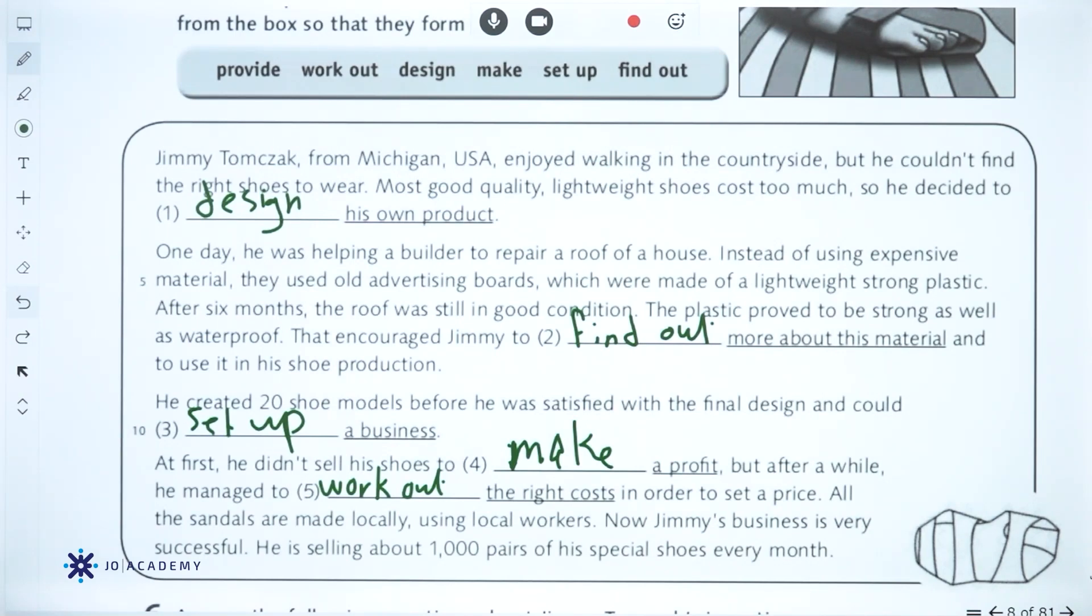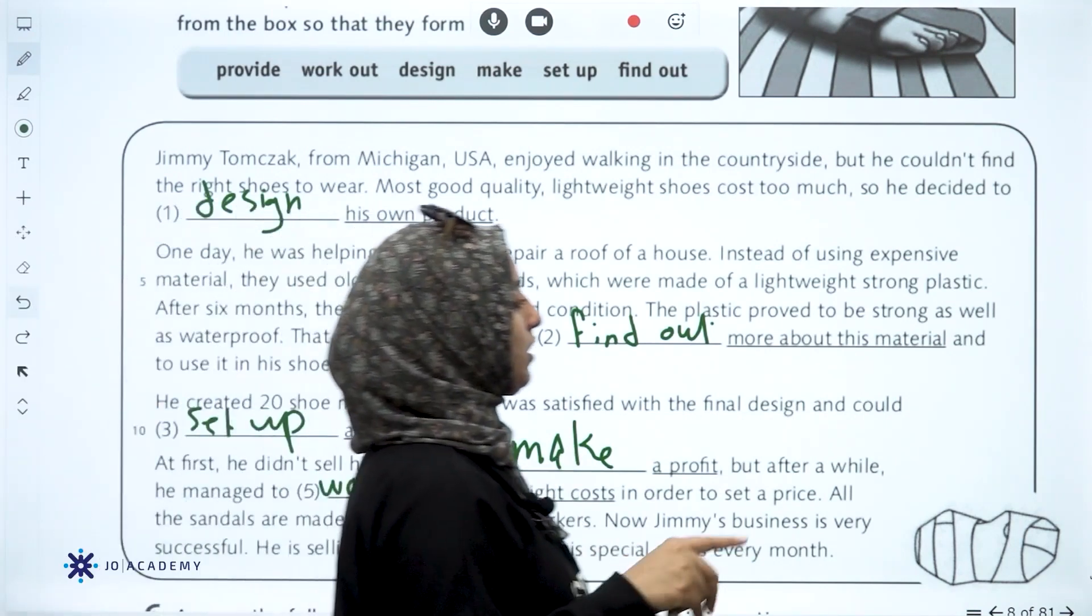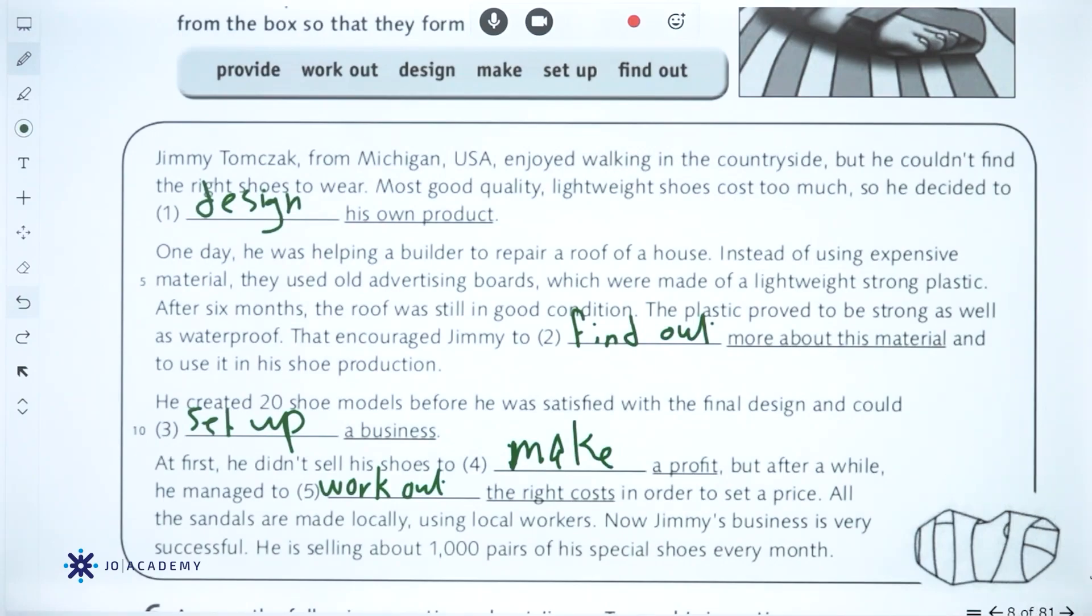All these sandals are made locally using local workers. Now Jimmy's business is very successful. He's selling about 1000 pairs of his special shoes every month.